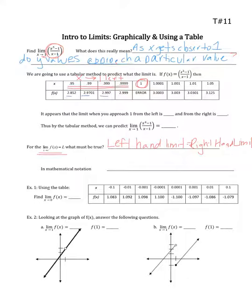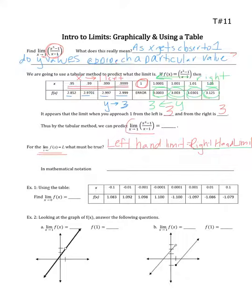Does it look like these y values are approaching or possibly reaching a particular thing? Yeah, it looks like the y's are getting closer and closer to 3. Let's go the other way — the right-hand limit. I'm going to approach 1 by coming in from numbers greater than 1, getting closer and closer from the right. Does it look like these y values are getting closer and closer to a particular value? Yes, they're coming into 3 as well. From the table, the limit from the left is 3 and the limit from the right is 3, so the overall limit as x approaches 1 equals 3.